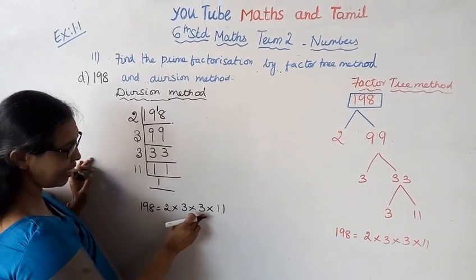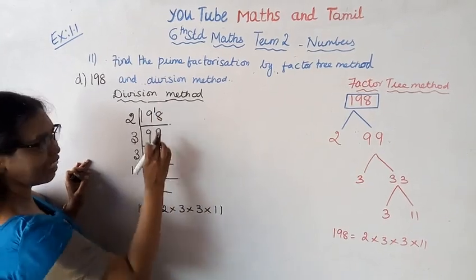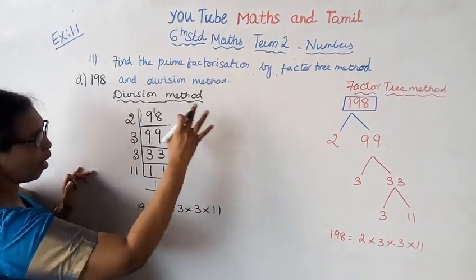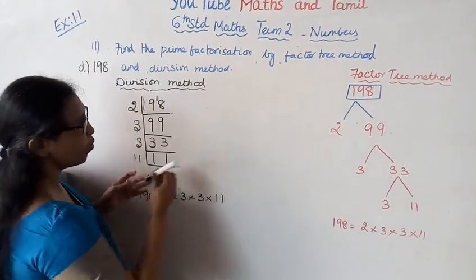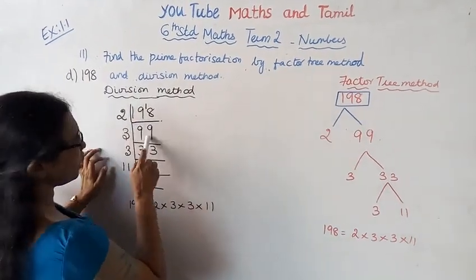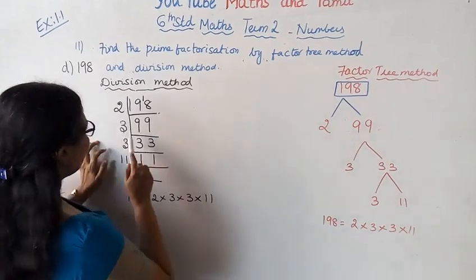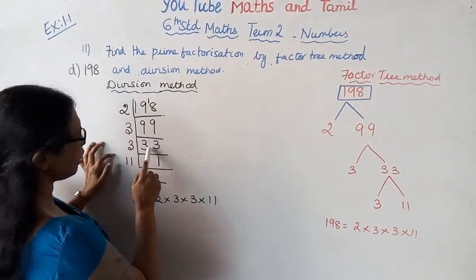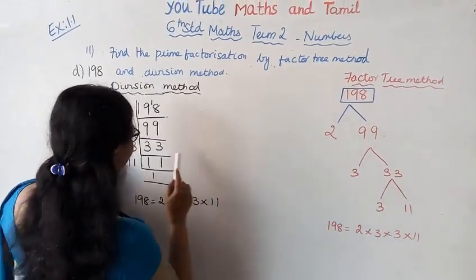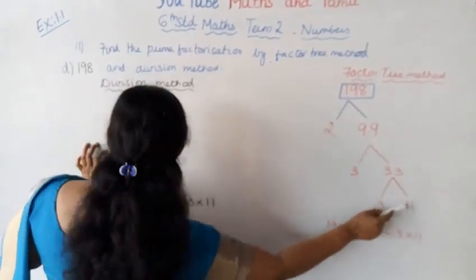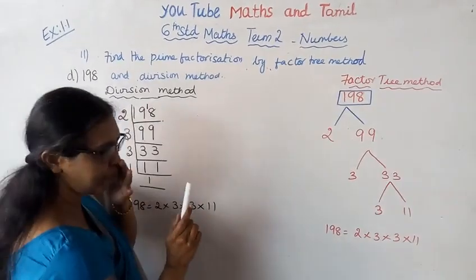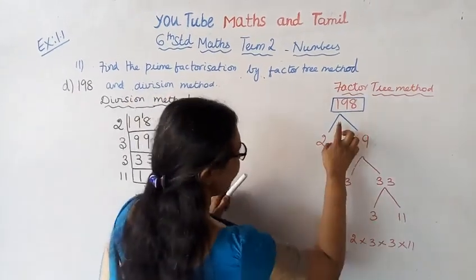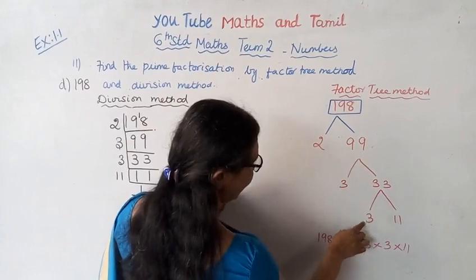So 198 equals 2 times 2 times 3 times 3 times 11. 2 times 3 is 6, 6 times 3 is 18, 18 times 11 is 198. 198 is 2 into 99, 99 is 3 into 33, 33 is 3 into 11. 1 is not a prime number. So the answer is 2, 3, 3, 11.